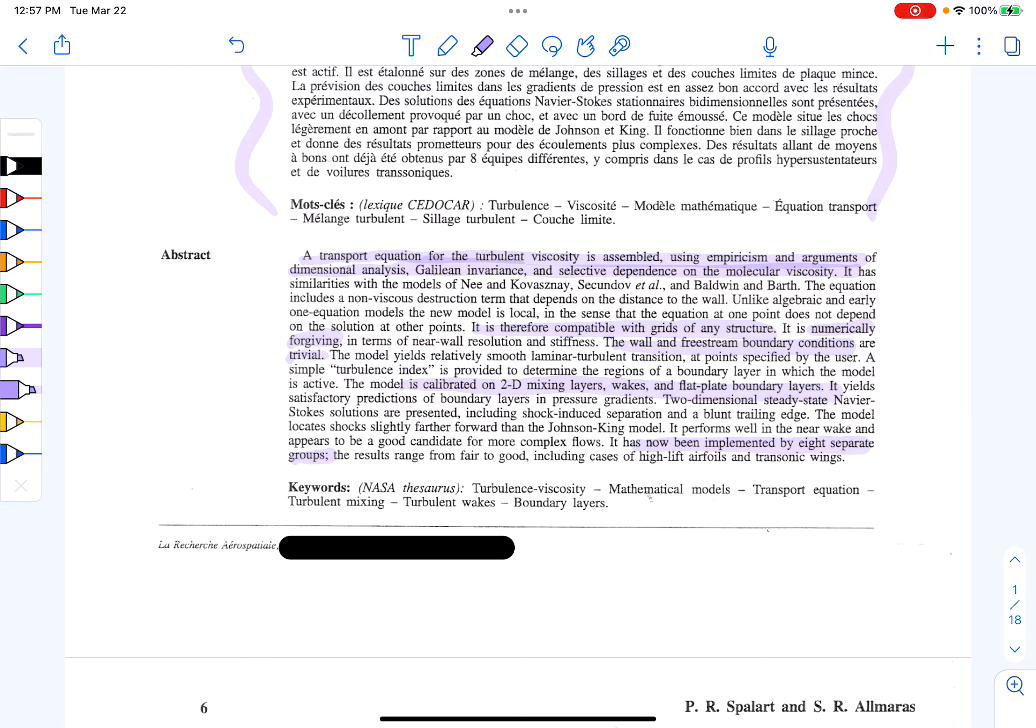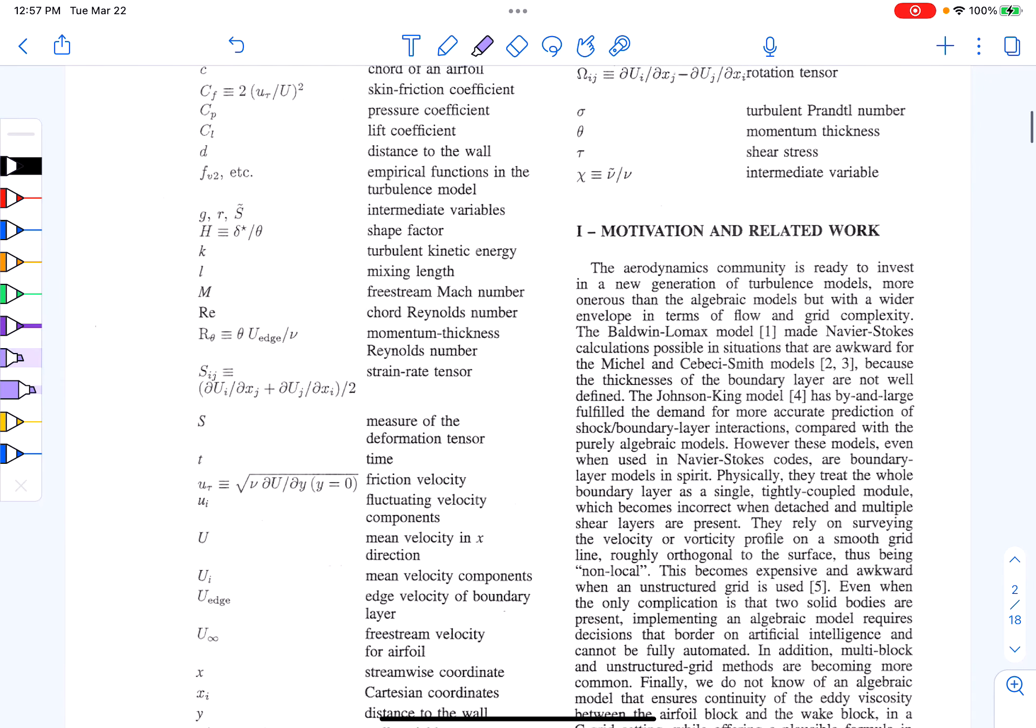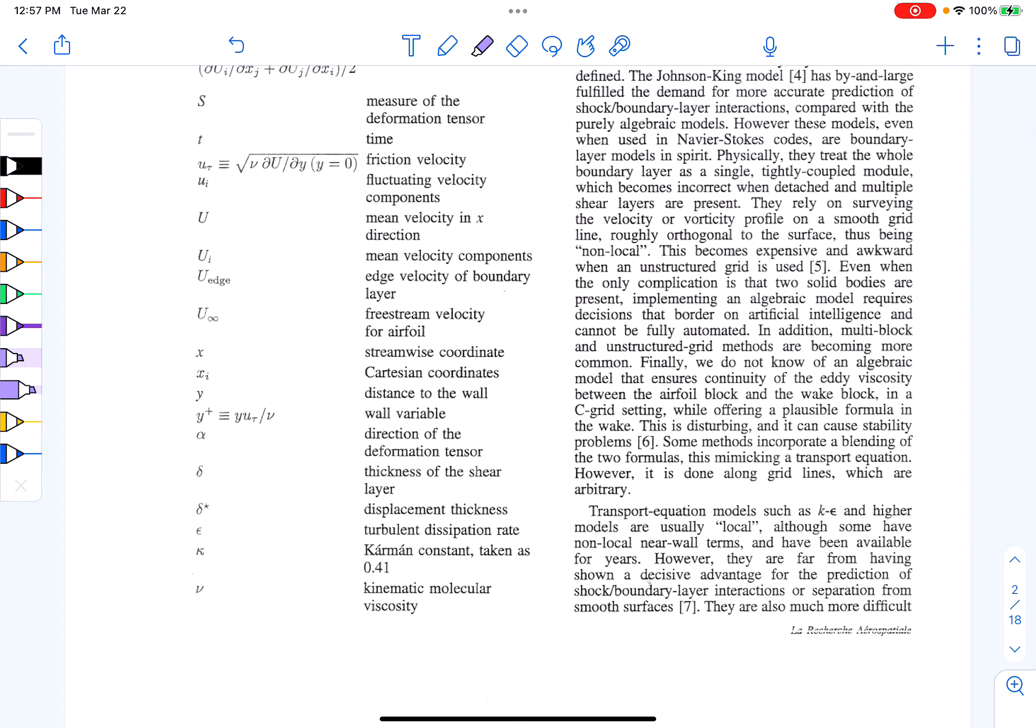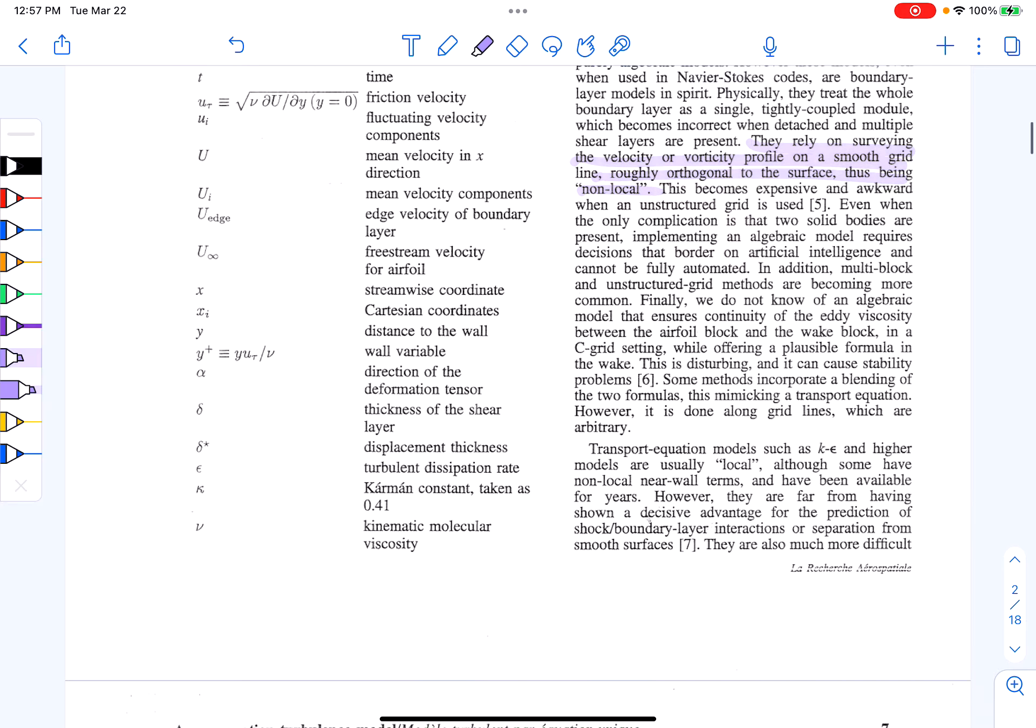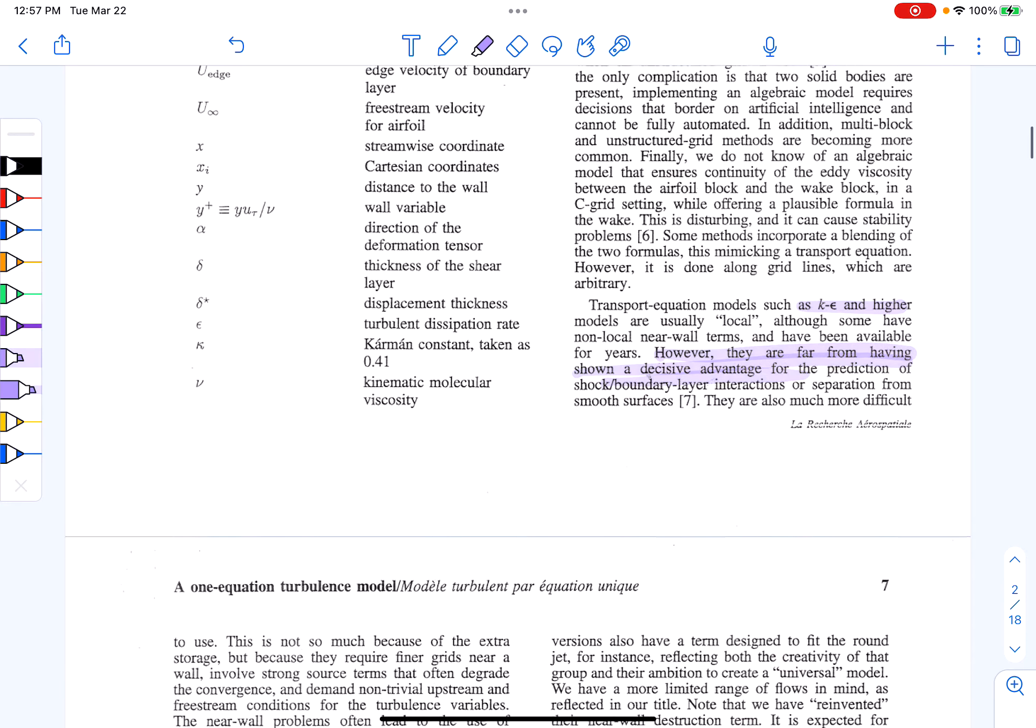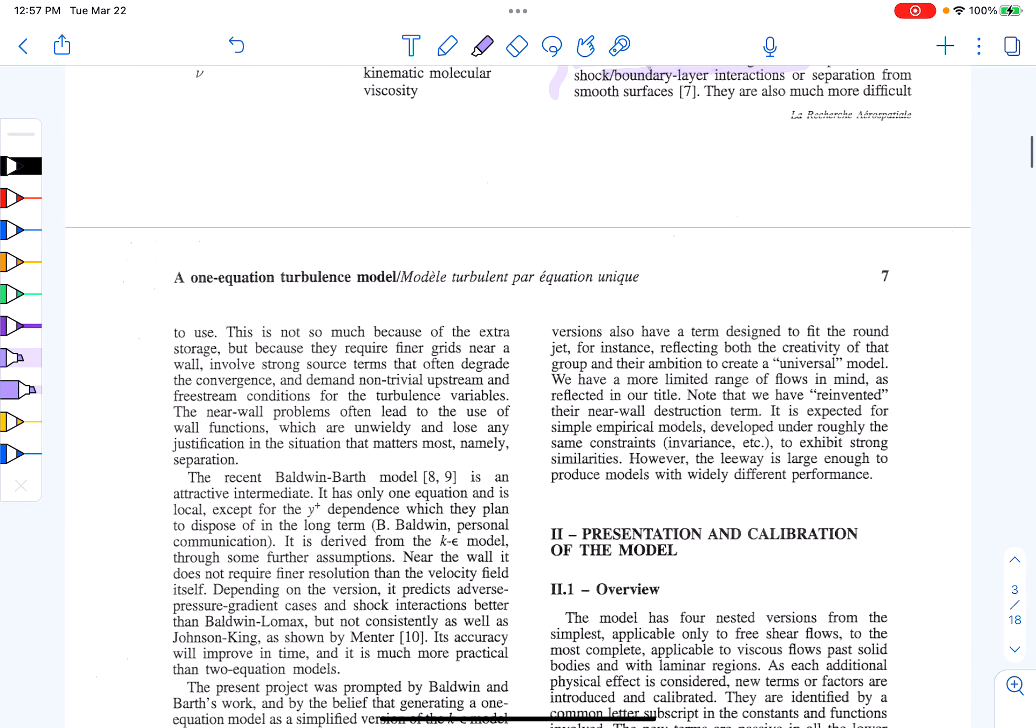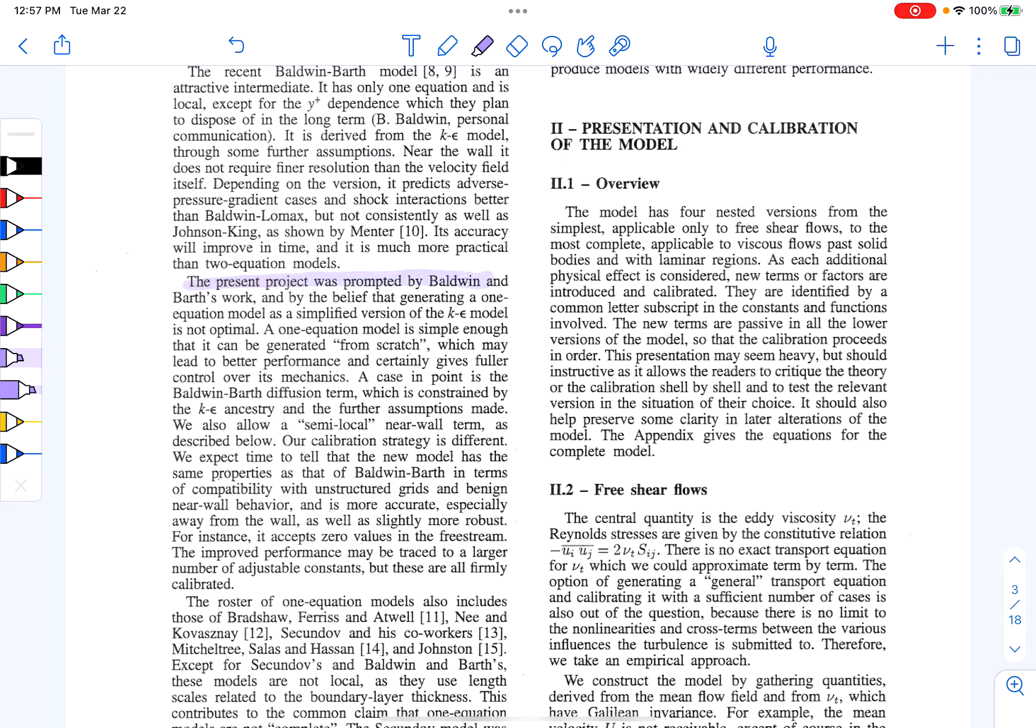But we already talked about the model a lot. I'd like to point out a few interesting things in the paper. They claim here, this is a nomenclature list if you wanted to see it, but they say that their model is local. And so that's a benefit beyond other models. And they give some criticisms of k-epsilon models and other types of models. And they're big proponents of one-equation model. They really were inspired by Baldwin and Barth's work and others, which they note there.